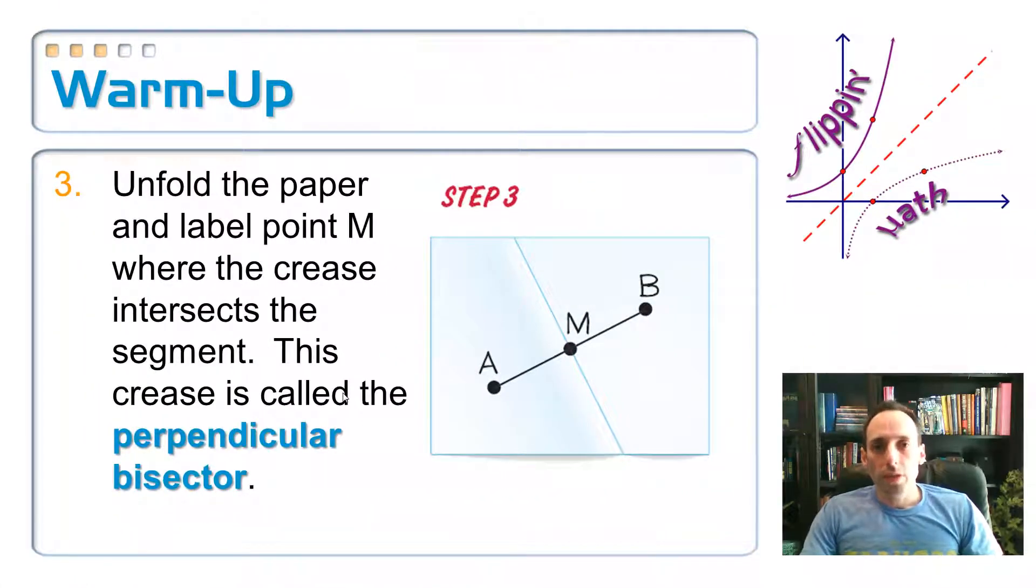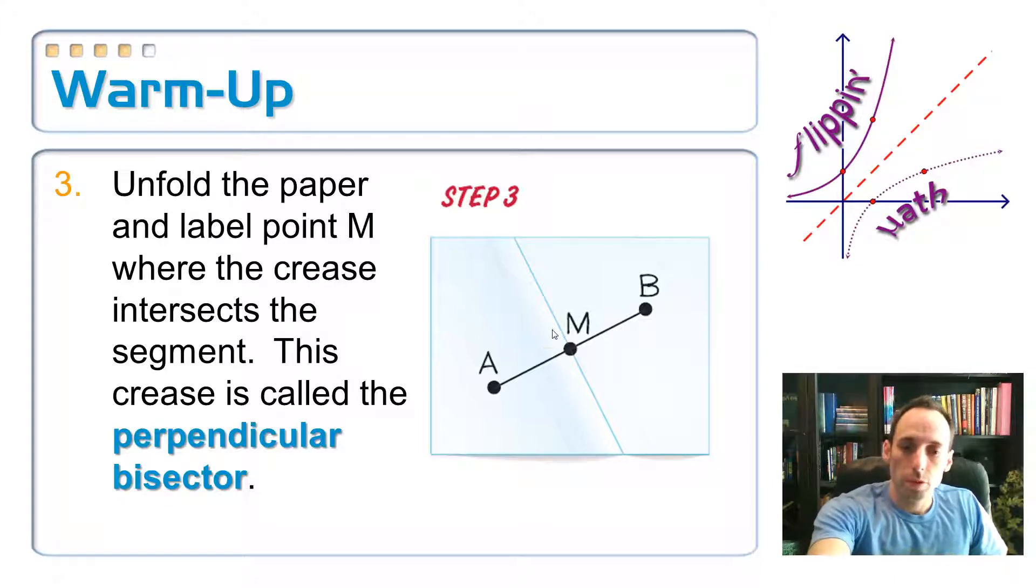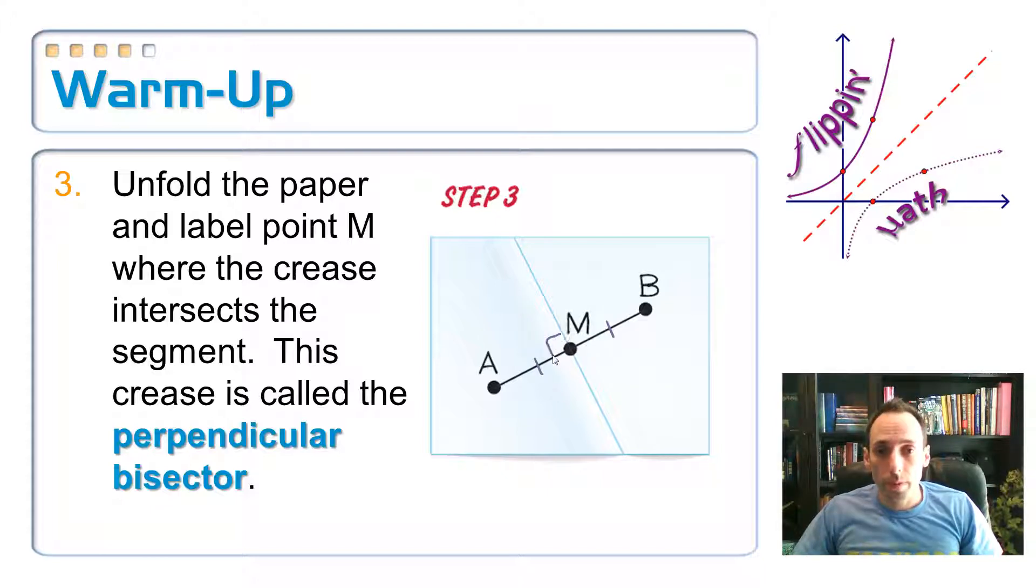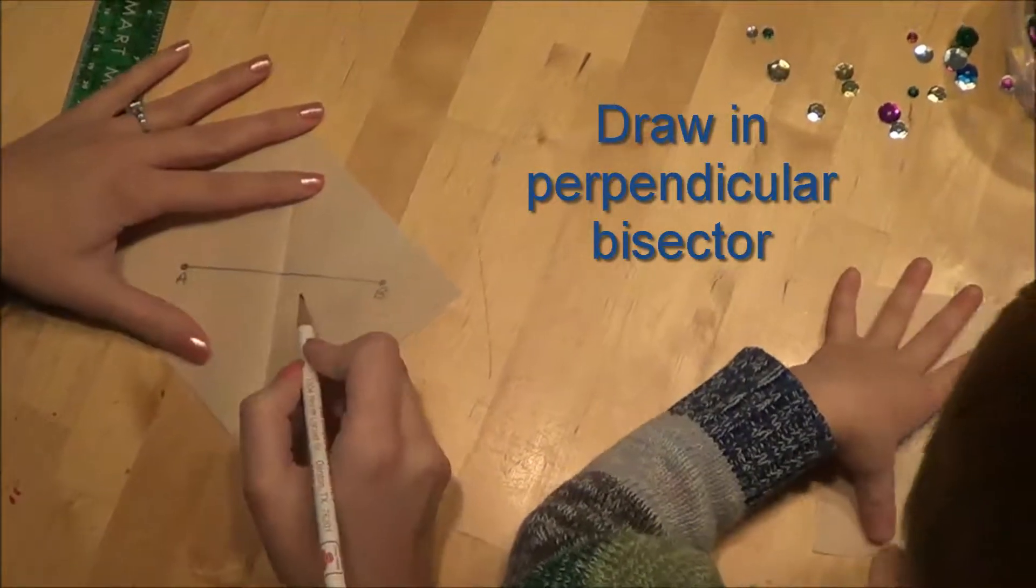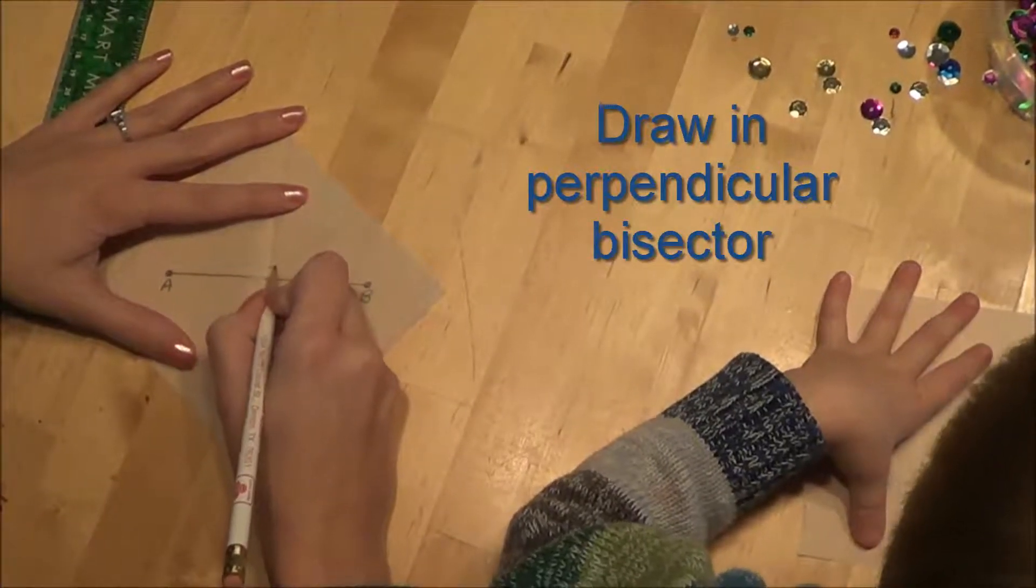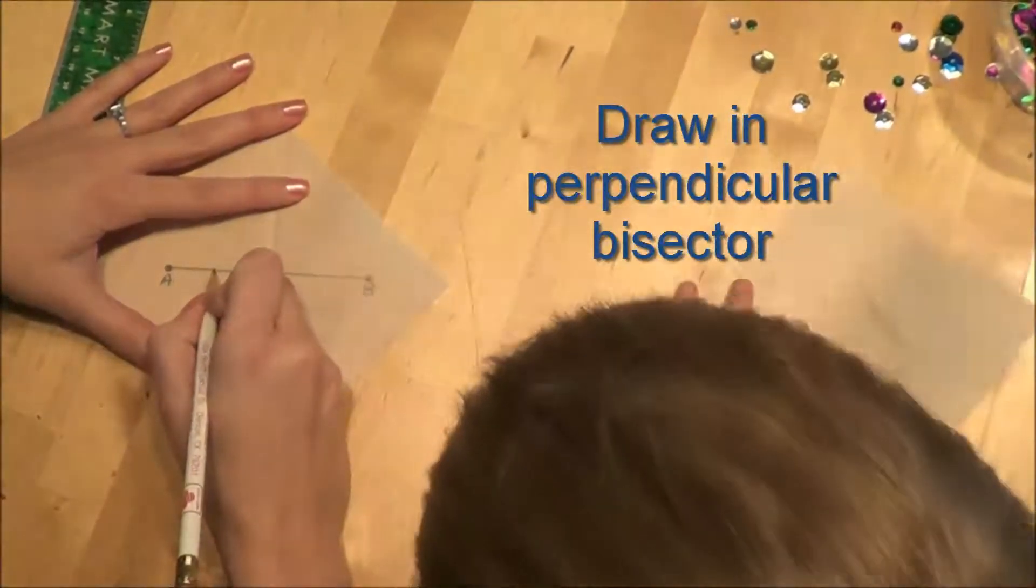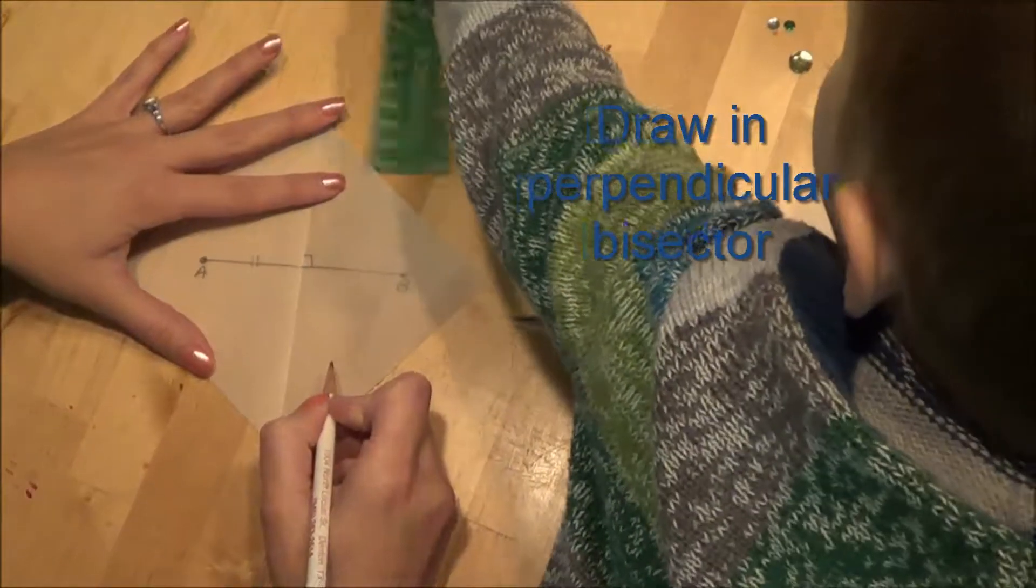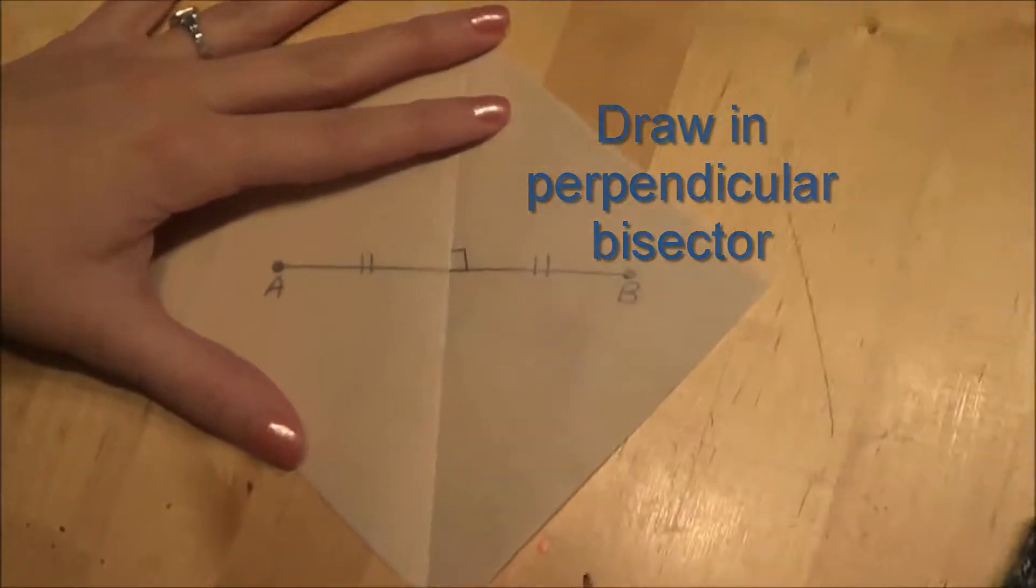When you unfold it, it makes a crease. Go ahead and draw yourself a line in that crease, and that crease is the perpendicular bisector of the segment. It goes through the midpoint and is perpendicular to it. Let me draw that on here - it goes to the midpoint so those two pieces of segment are the same and is perpendicular to it.